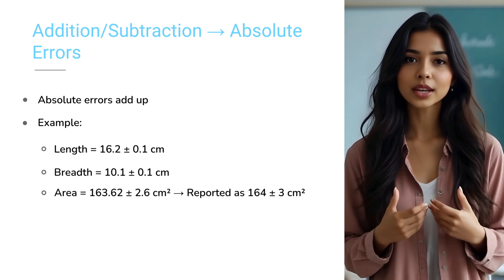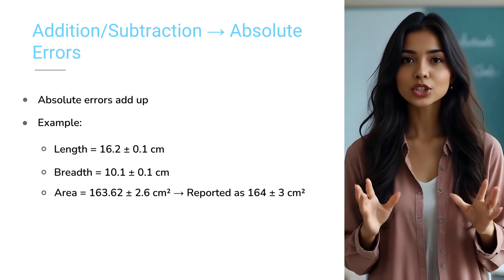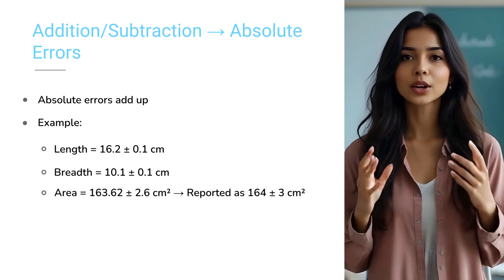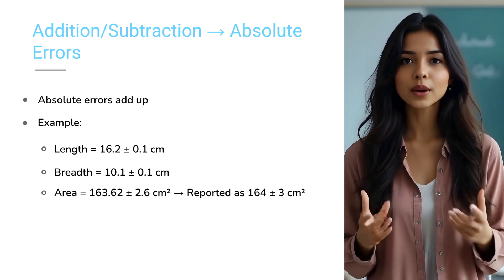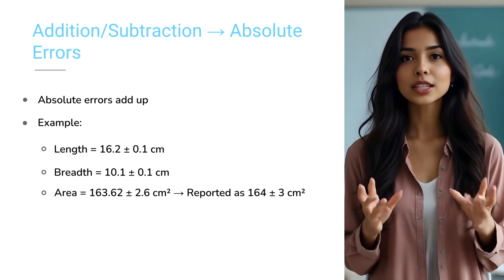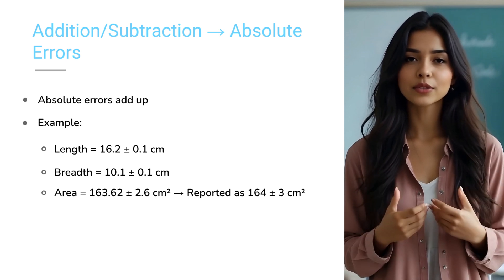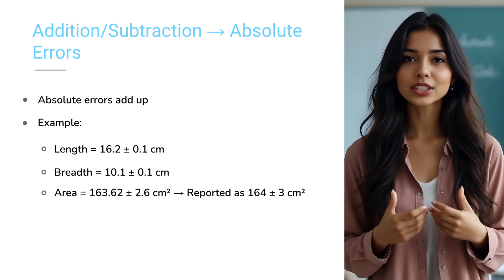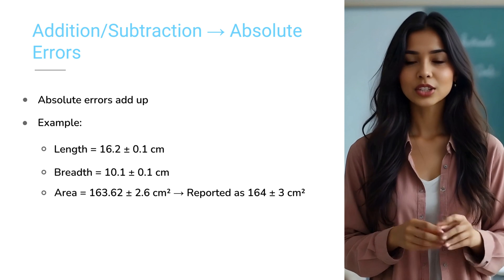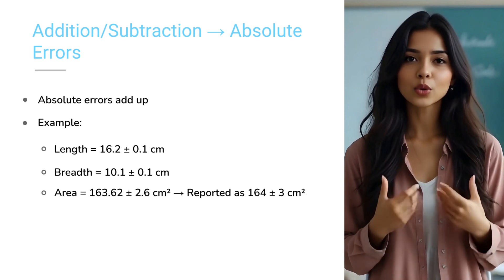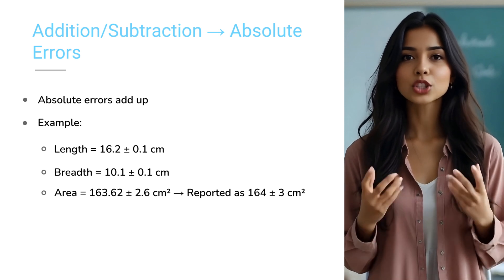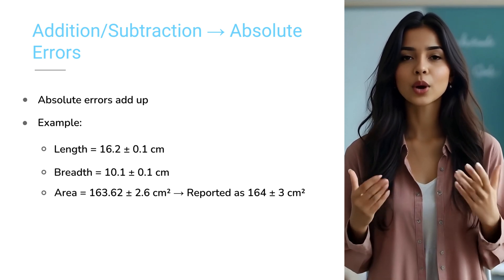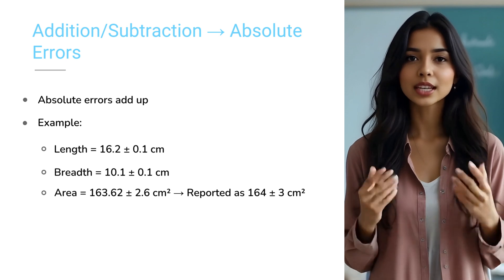Total relative error equals to 1.6%. So the uncertainty in area will be 1.6% of 163.62, which we round off to plus or minus 3 cm². Final area equals to 164, plus or minus 3 cm². Always report the result with its appropriate uncertainty. It shows both your measured value and the possible range of error, just like a true scientist.